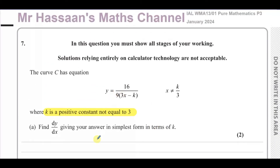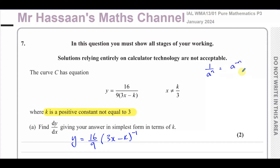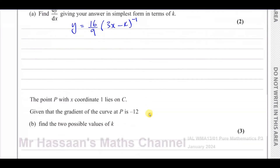What I'll do first is write y in a form which is easy to differentiate. So I'll put y equals 16 over 9 times (3x minus k) to the power of negative 1. Using the laws of indices, we know that 1 over a^n gives you a to the power of negative n. So writing the bracket in the numerator, we put the power of minus 1. Now it's ready to be differentiated.